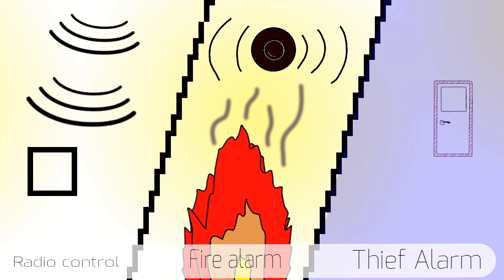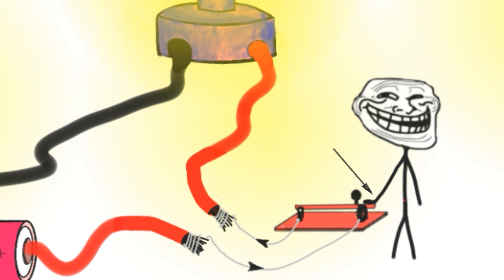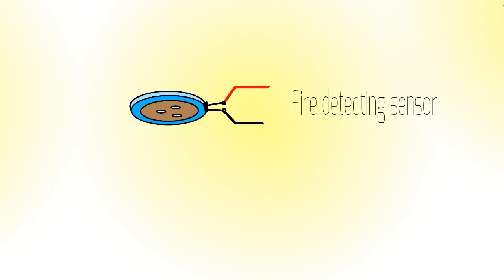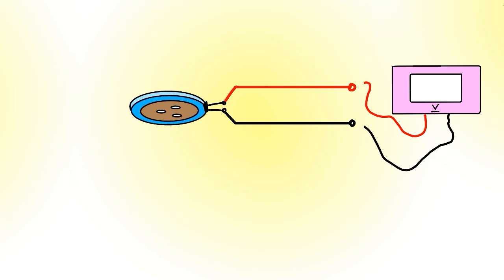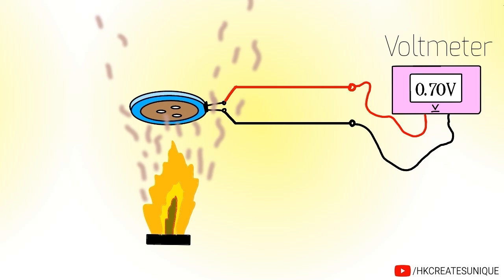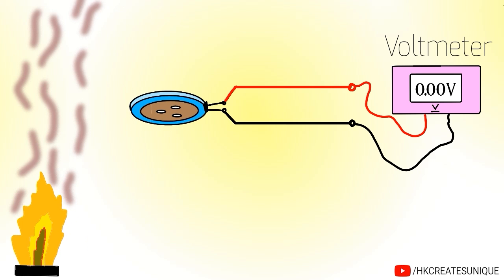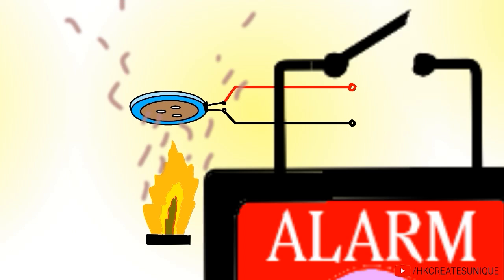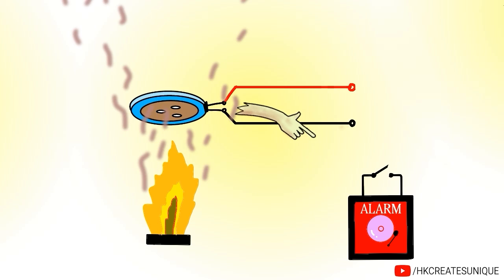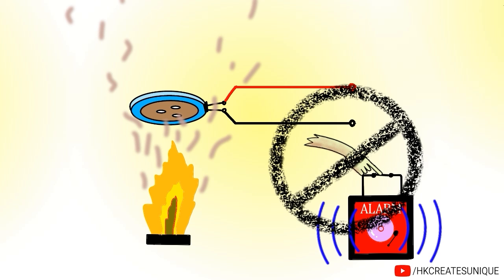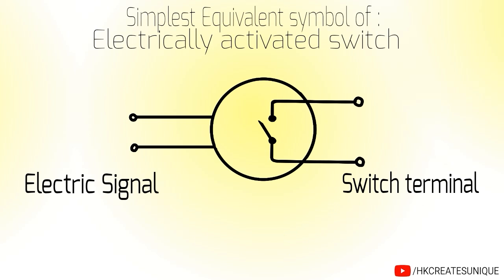But in some situations, the switch needs to be electrically activated rather than hand activated. As an example, a fire detecting sensor gives a voltage signal as fire is detected. The voltmeter shows approximately 0.7V when the fire is near and 0V when it is away. But it does not have a hand to turn on the switch of alarm. That's why it needs an electrically activated switch.